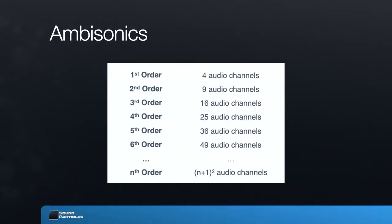To recap the number of channels per order: four channels is first order, nine channels is second order, and so on. One interesting thing about ambisonics from an engineering point of view is that it's very easy to rotate the sound field — whether yaw, pitch, or roll. All these rotations can be easily applied to ambisonics because it's only a matter of applying a matrix.